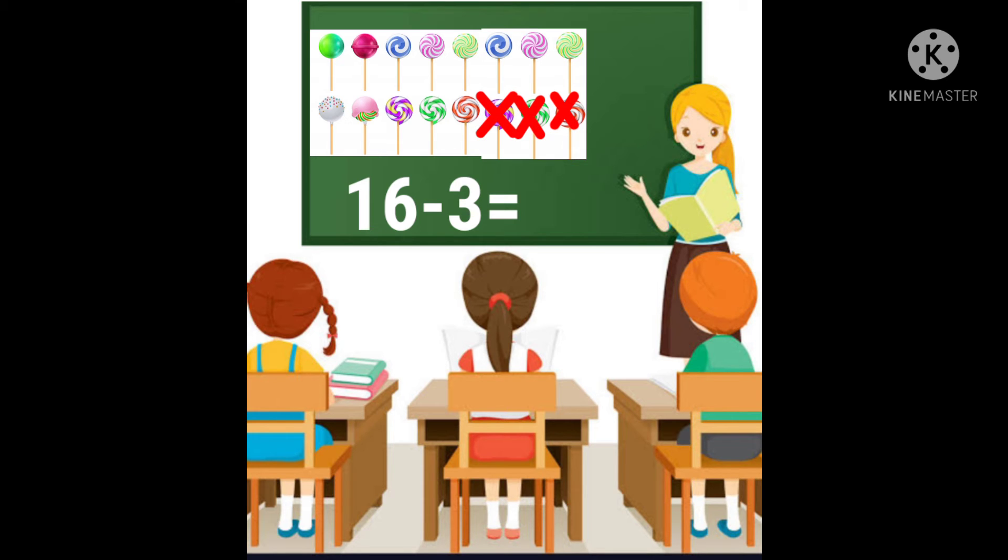Children, now, how many lollipops are left? Just count. 1, 2, 3, 4, 5, 6, 7, 8, 9, 10, 11, 12, 13. 13 lollipops are left. That means, 16 minus 3 is equal to 13.